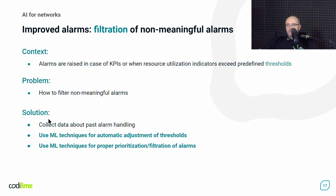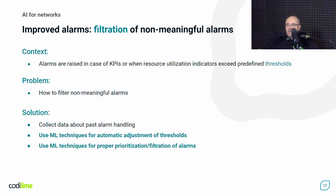In this case, we could also use some machine learning techniques. The first step is simply to collect data about past alarm handling. How to achieve such data is another problem, but for instance, we could use a trouble ticket tracking system to retrieve information on how particular alerts were handled by our staff. Machine learning techniques could then be used for filtration of such alarms or to adjust the threshold levels.